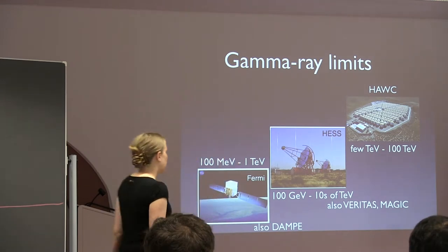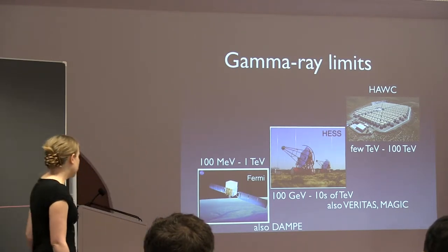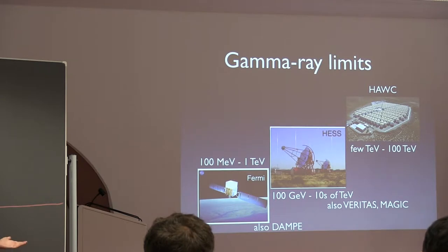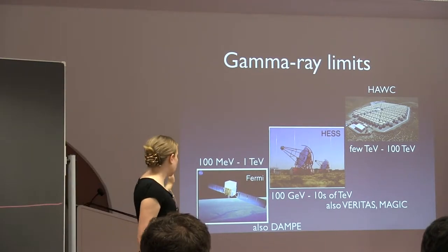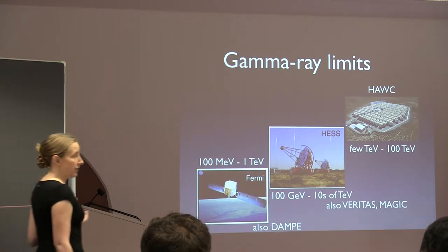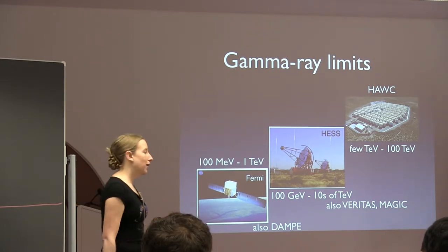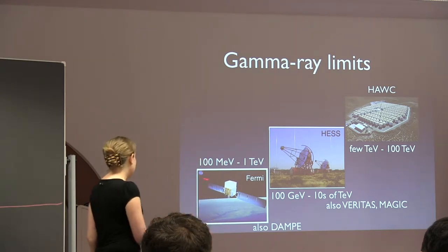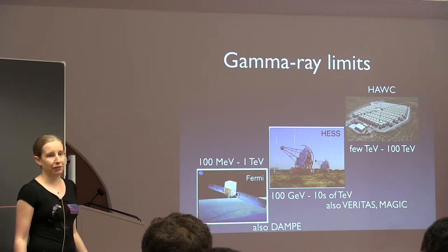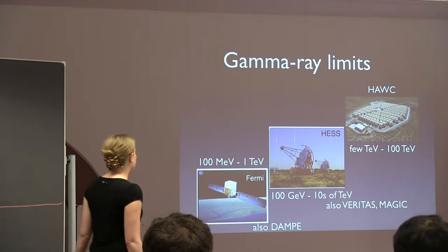Let me talk about limits from gamma rays. There are basically three classes of telescopes in the gamma ray energy range above a GeV, excellent for searching for WIMP-scale dark matter in the GeV up to 100 TeV range. At the low end, we have space-based telescopes that measure gamma rays directly impinging on the detector. A gamma ray comes in, produces a shower of particles, and you reconstruct where it came from. Because they're in space, they have to be small — Fermi has an effective area of around a square meter.